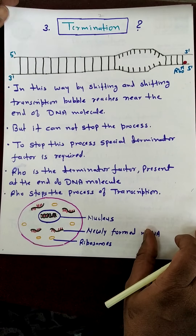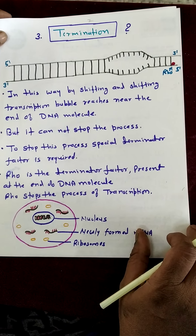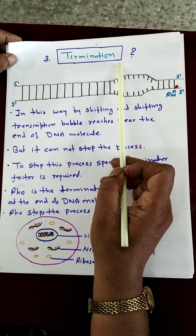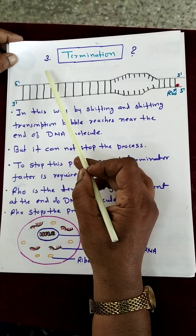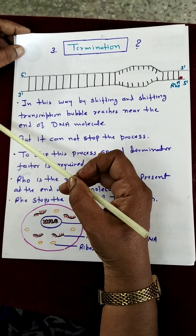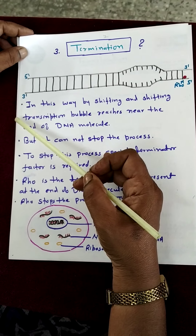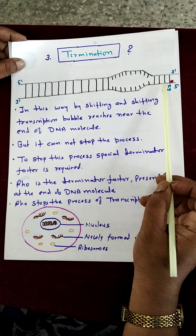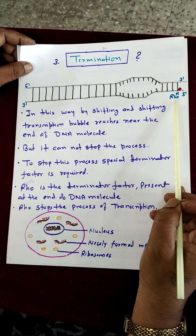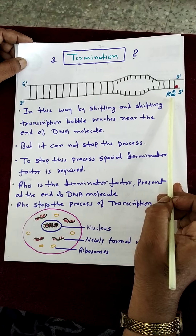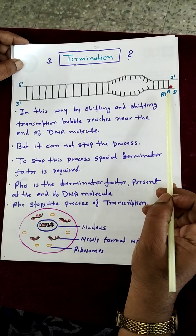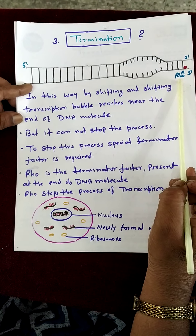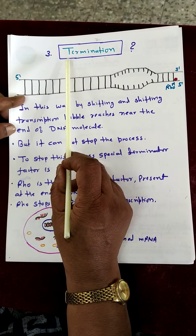The third step in the process of transcription is called termination, meaning to stop the process. Initiation means starting the process, for which the sigma factor is required. Likewise, to stop the process of transcription, a special factor called rho is required. Because the enzyme RNA polymerase cannot stop the process on its own, the rho factor is necessary to stop the transcription process. Stopping of transcription is called termination.